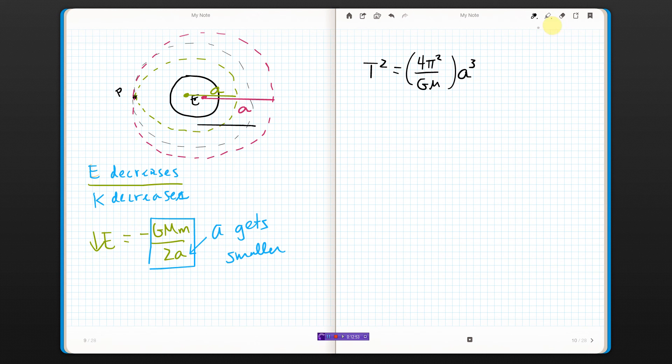So we just said A went down, so if A goes down, since they're proportional, and I know there's squares and cubes in there, but I'm only asking if period went up or down, I don't know by how much, and I don't really care. A went down, period will go down too. So the period also decreases. And I think that's it for this video.